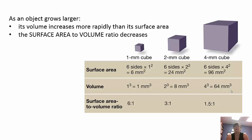For a 1mm cube, the surface area to volume ratio is 6:1. For a 2mm cube it's 3:1, and at 4mm it drops to 1.5:1. A way to effectively be larger while remaining effective is to add folds. Mitochondria have folds to increase surface area for ATP production. The stomach and small intestine have folds to increase surface area for absorption.